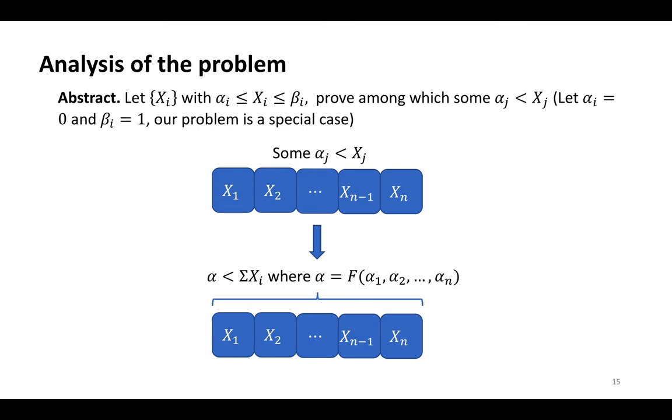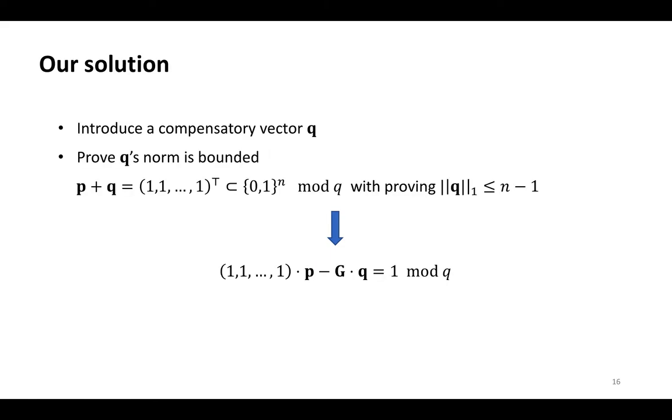To address this problem, we consider the following substitution. Let the variable x with index i be in the interval [α, β]. Prove that among them, α ≤ xi < β. Interestingly, let α be zero and β be one. Our problem is a special case. The difference between our problem and the Libert et al.'s problem is to prove some variable among them satisfies the inequality. Actually, it is hard to prove this relationship one by one. Thus, we change our strategy. We equivalently transform it into a sum problem and prove the latter one. Concretely, we sum xi and then prove that α is less than the sum of xi, where α is a fraction value by taking α₁ to αₙ as input.